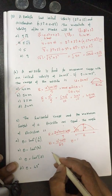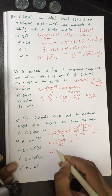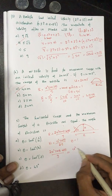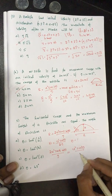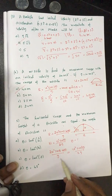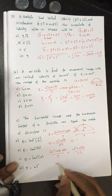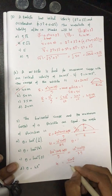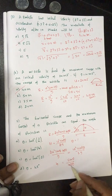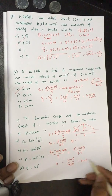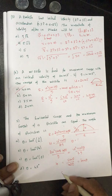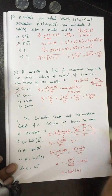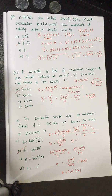Writing sin 2θ as 2 sin θ cos θ, horizontal range R = 2u² sin θ cos θ / g, and maximum height H = u² sin²θ / (2g). Equating these: 2u² sin θ cos θ / g = u² sin²θ / (2g). Cancelling u² and one factor of sin θ, then rearranging gives sin θ / cos θ = tan θ = 4. So θ = tan⁻¹(4).